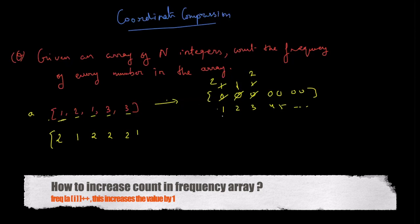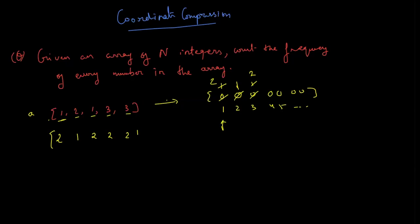Now you need the frequency of 1. So we can say the number stored at 1 will be the frequency of 1 because we have incremented it that many times. So we can easily get 2, 1, 2, 2, 1.